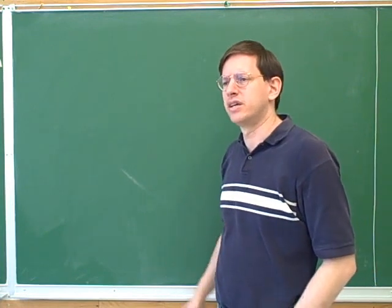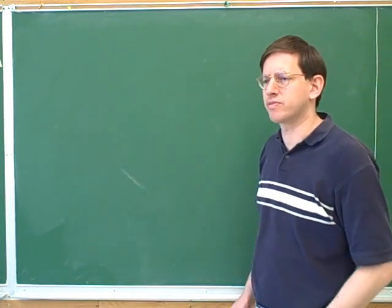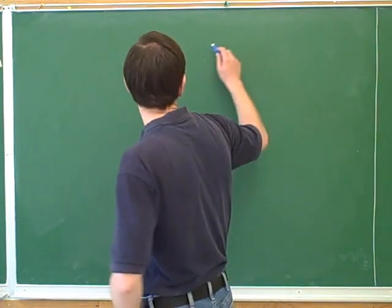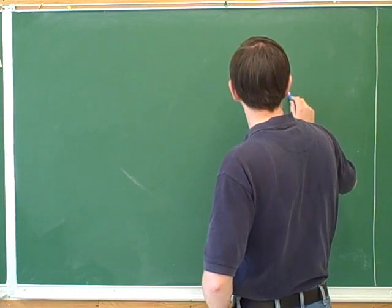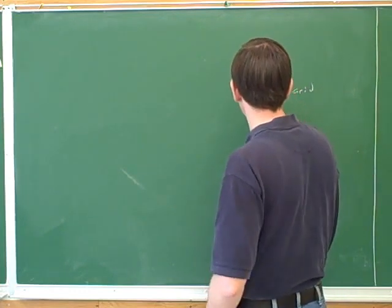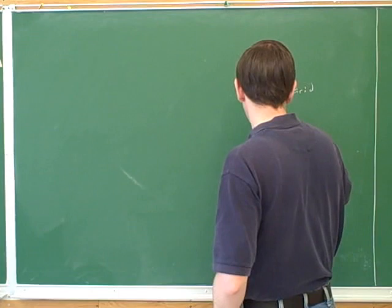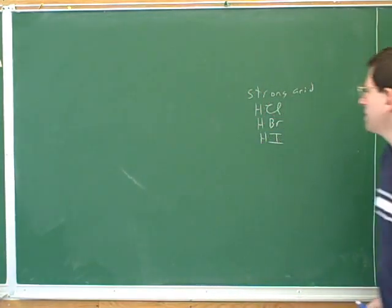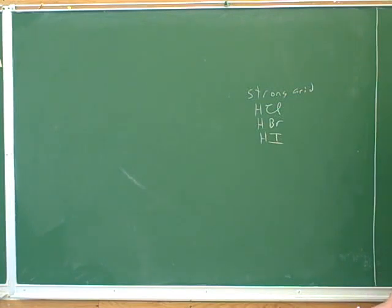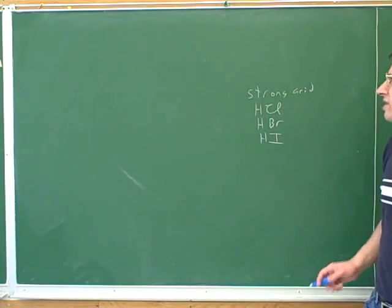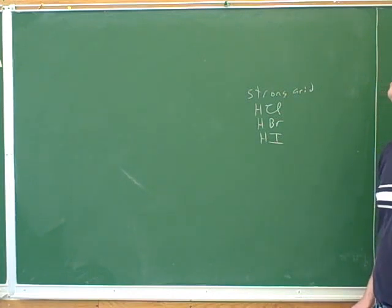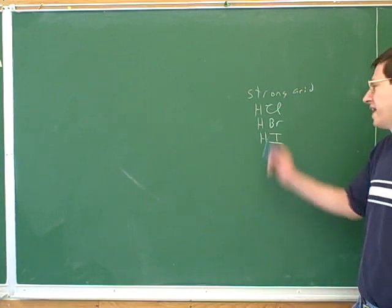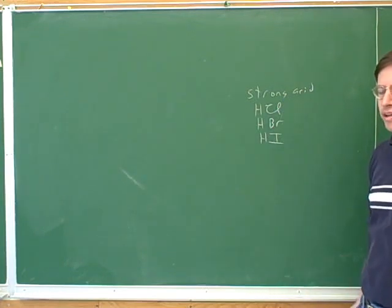Can you think of any strong acids? Do you remember any strong acids from general chemistry? Here's three very important strong acids for organic chemistry. Notice that these are all hydrohalogenic acids, they're all halo acids because they've all got halogens.